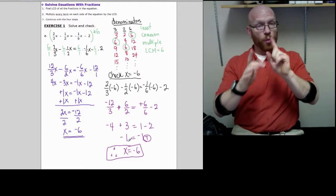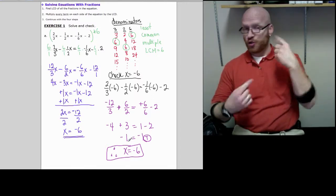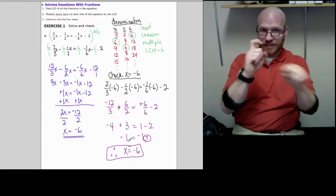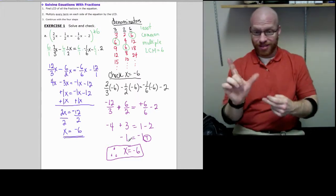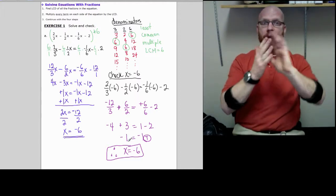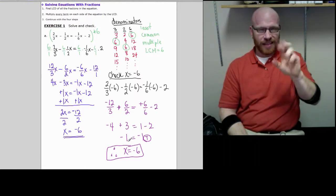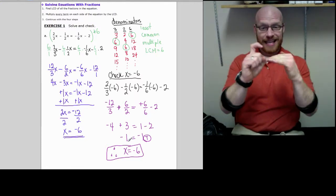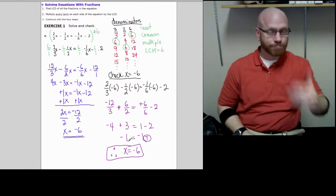Notice that when I found the answer in blue, this is my answer so far. Once I checked it, x equals negative 6, I went through and found that both the left and the right become negative 1 and negative 1. Therefore, that's what it means: therefore, x equals negative 6. That's my answer. Thank you.